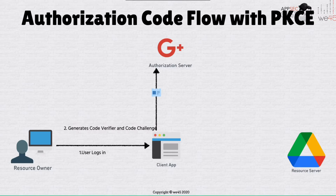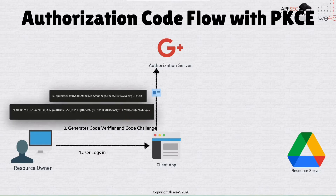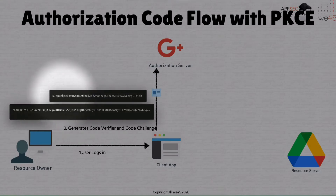The code verifier is a high-entropy secret generated from a pseudo-random number generator. It generates a high-entropy string that does not need an additional salt — that string is called the code verifier. The code verifier is then SHA-256 hashed, and from that SHA-256 hash a Base64-encoded string is generated. So you have the code verifier, which is the original high-entropy string, and the code challenge, which is the hashed and Base64-encoded version of it.